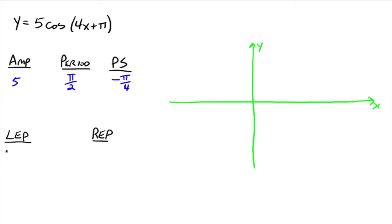Left end point. So we take 4x plus pi, set that equal to 0, solve for x, x equals negative pi over 4. Right end point. Take 4x plus pi, set that equal to 2 pi. Solve for x. x equals pi over 4. Okay, so we're starting at negative pi over 4. We're ending at pi over 4. Halfway between 0 and pi over 4 would be pi over 8. Halfway between negative pi over 4 and 0 would be negative pi over 8. We're going up to 5 and down to negative 5.